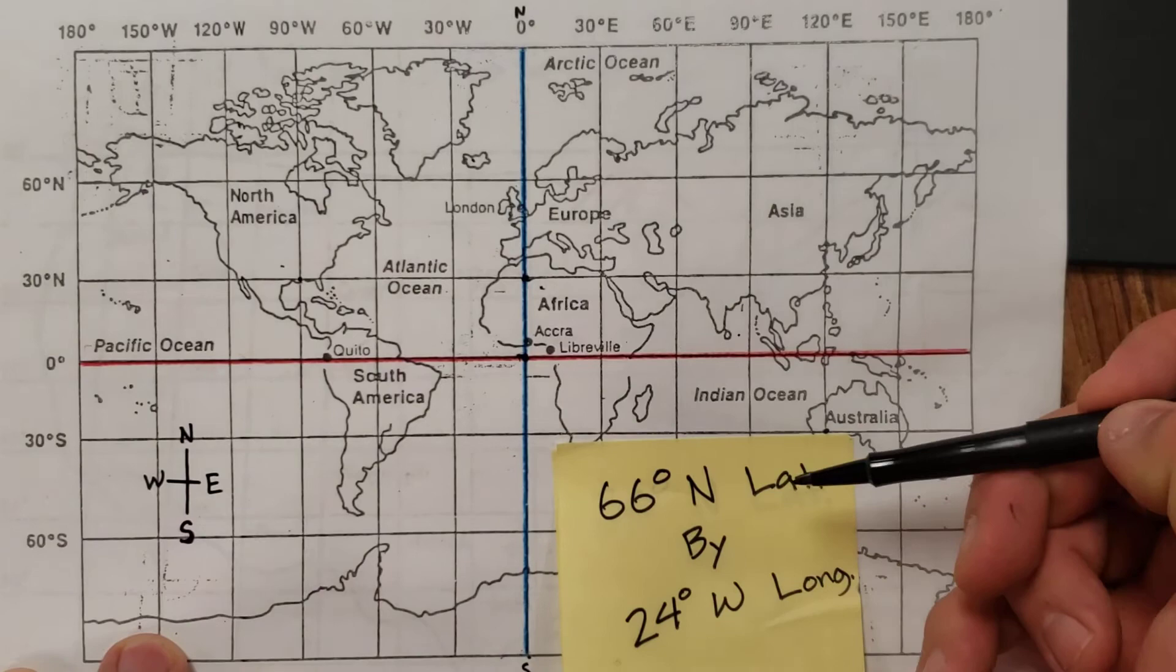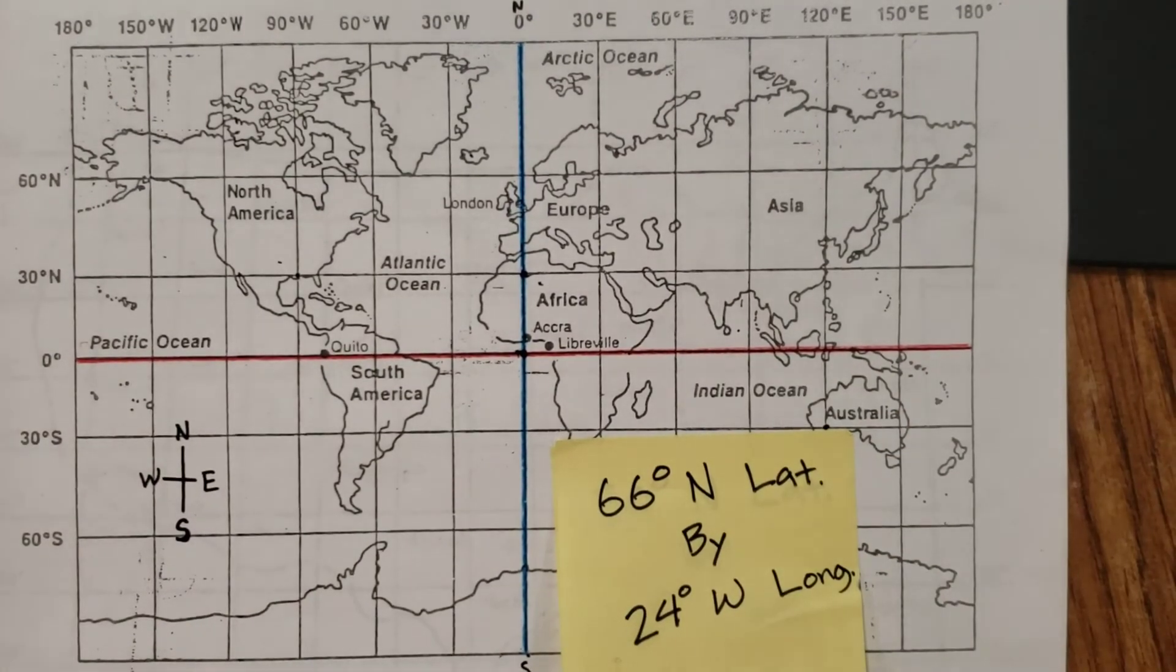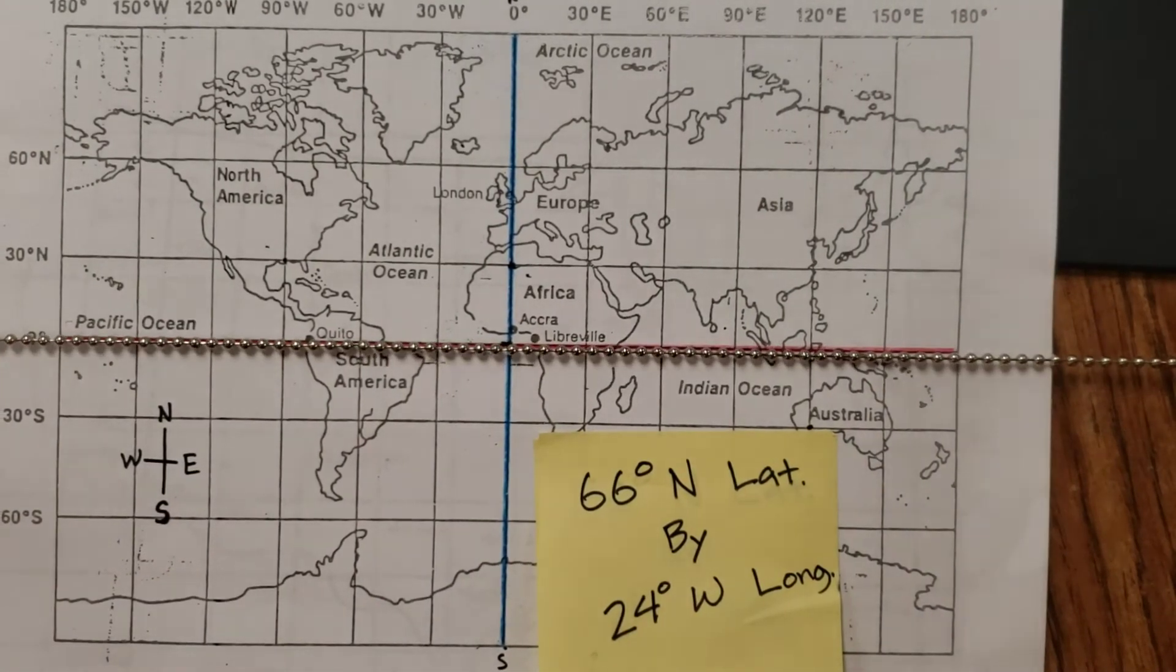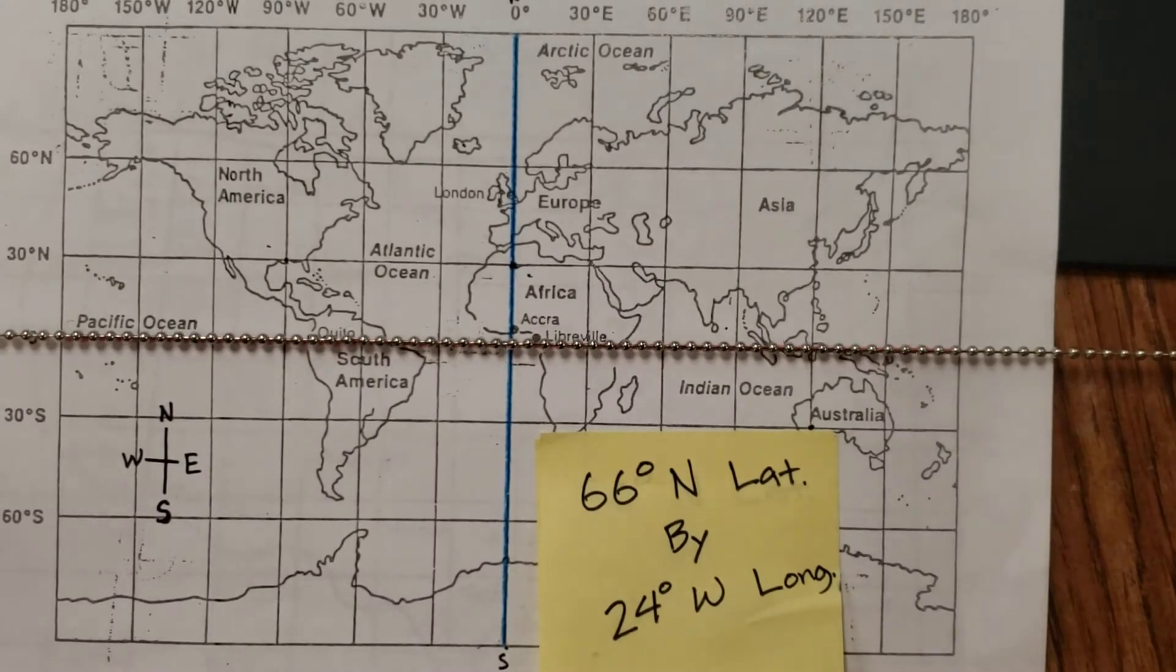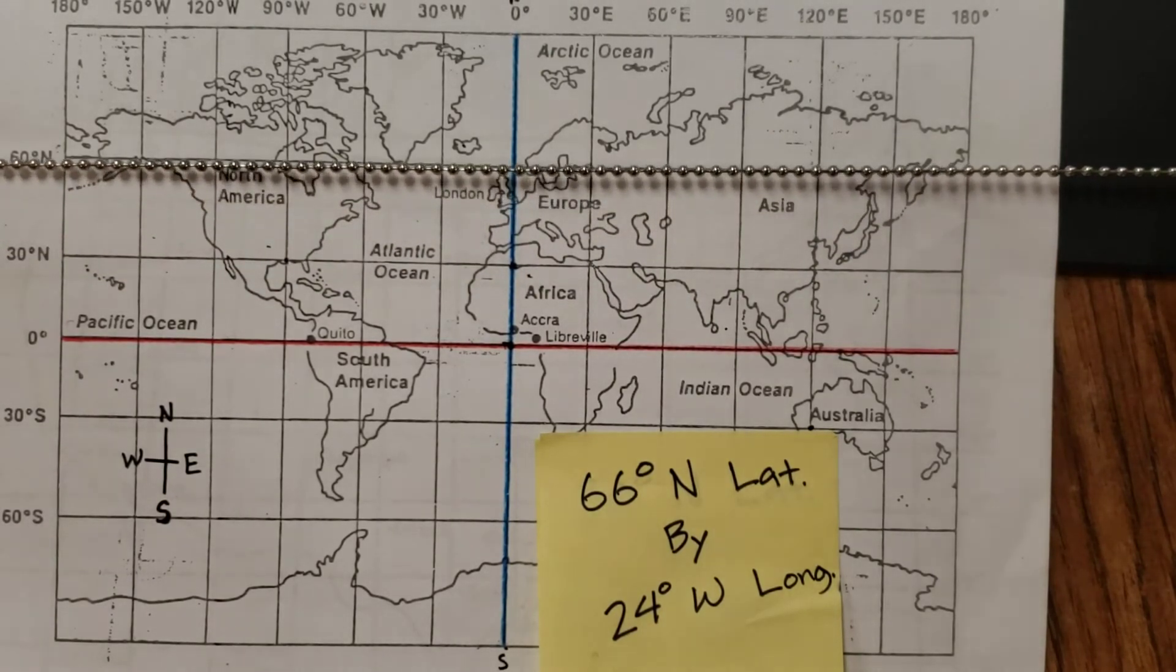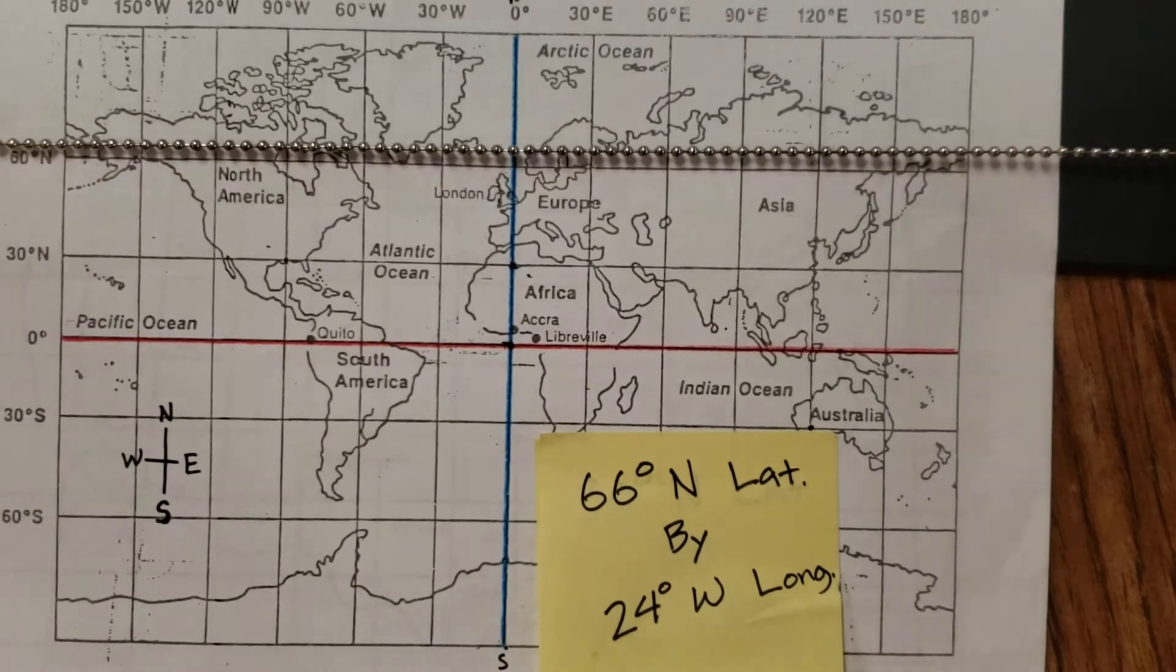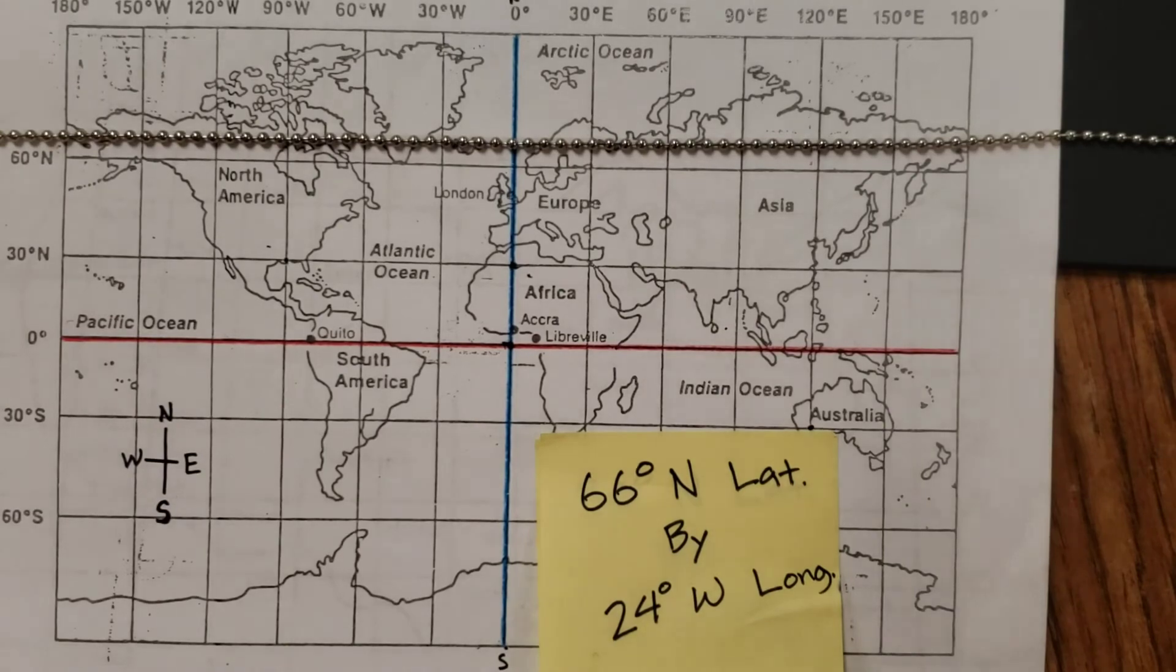Here we go. Let's go 60 to 66 degrees north latitude. And again, latitude is like a ladder. Equator is zero latitude. I'm going north, right? So I'm moving up toward the 66 degree mark. Well, there's 60 and I guess it's just going to be a little bit higher than 60. So let's lay it right there.